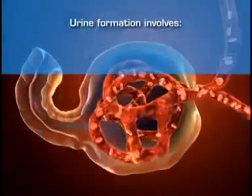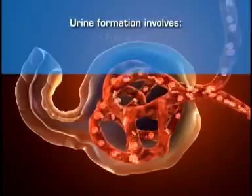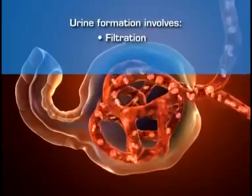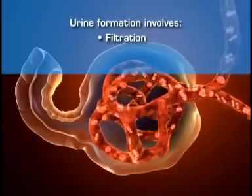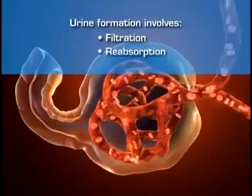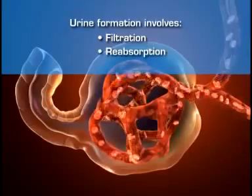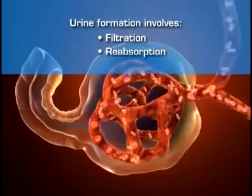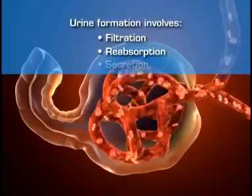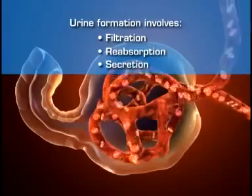Urine formation involves the filtration of the blood by the glomerulus to form an ultrafiltrate of urine, the tubular reabsorption of electrolytes and nutrients needed to maintain the constancy of the internal environment, and the secretion of waste materials.